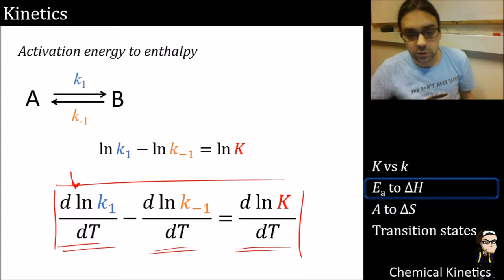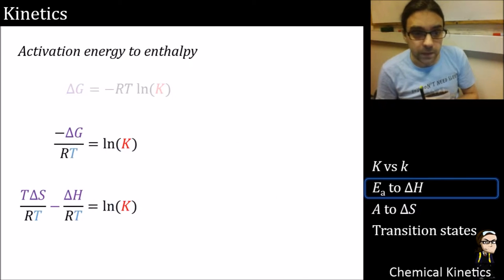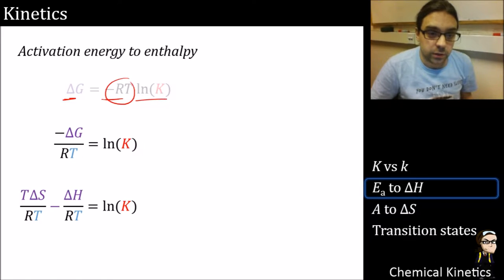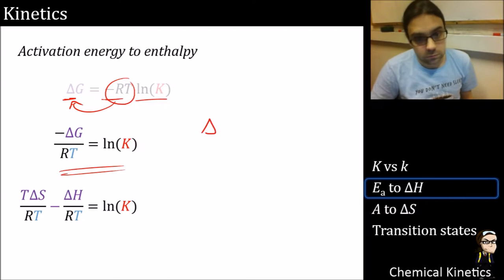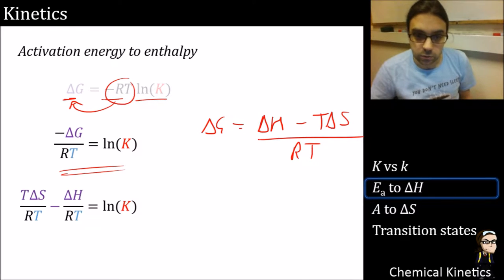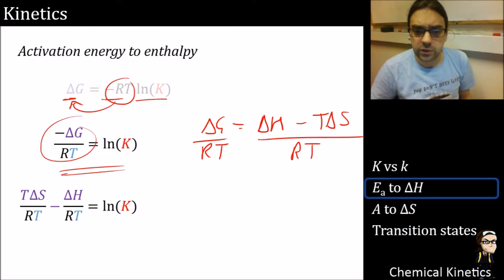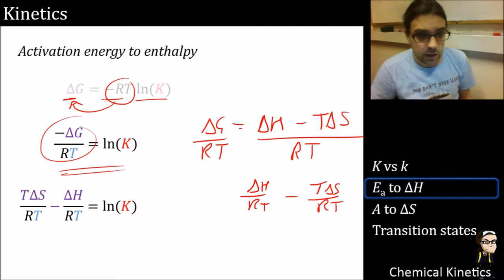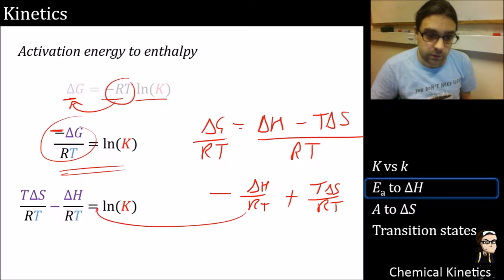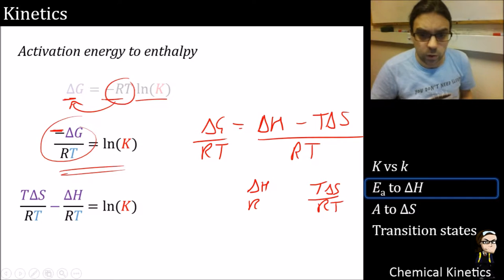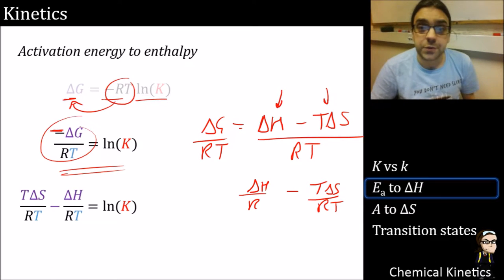We start with delta G equals negative RT ln K, rearrange it, and substitute delta G for delta H minus T delta S. We can swap that entire factor and break it into two components: delta H over RT and T delta S over RT. This manipulation - substituting delta H and delta S for delta G and vice versa - is something you need to get used to doing for tutorial questions.